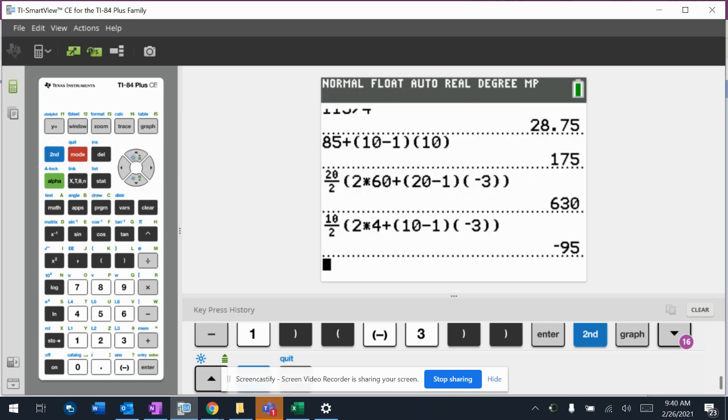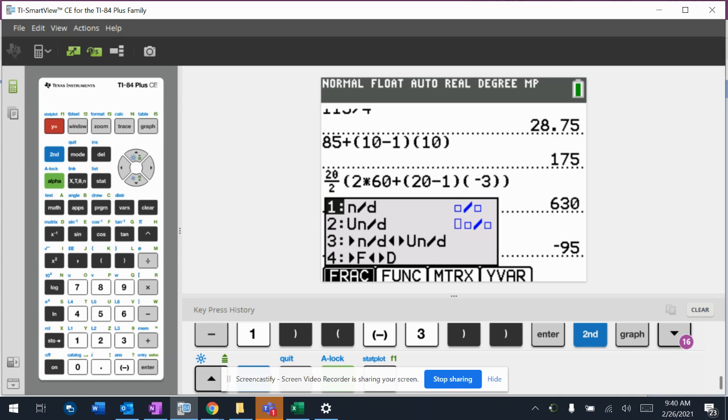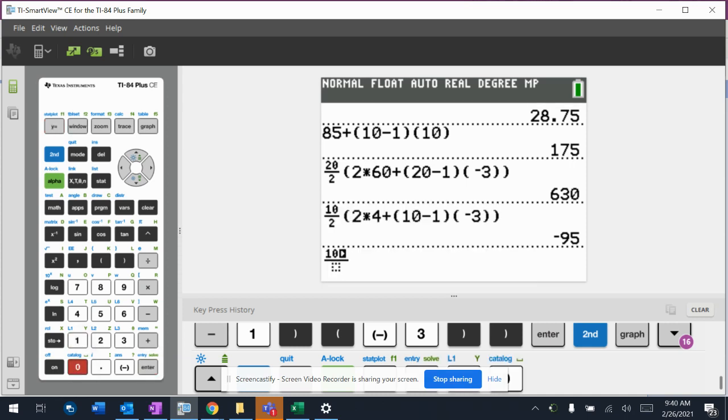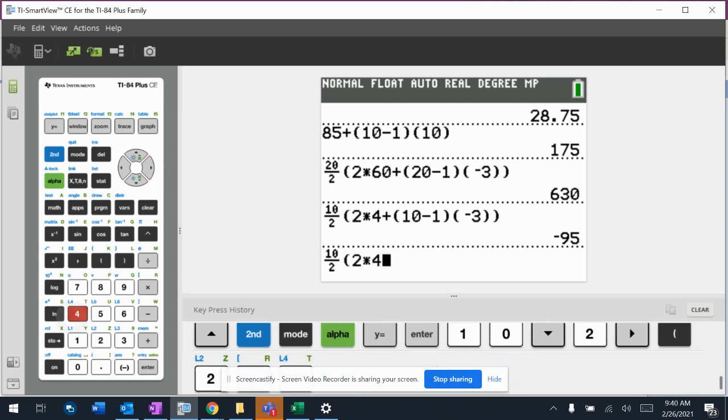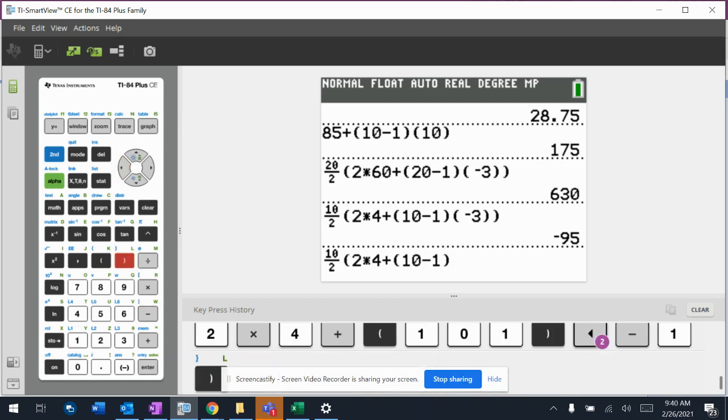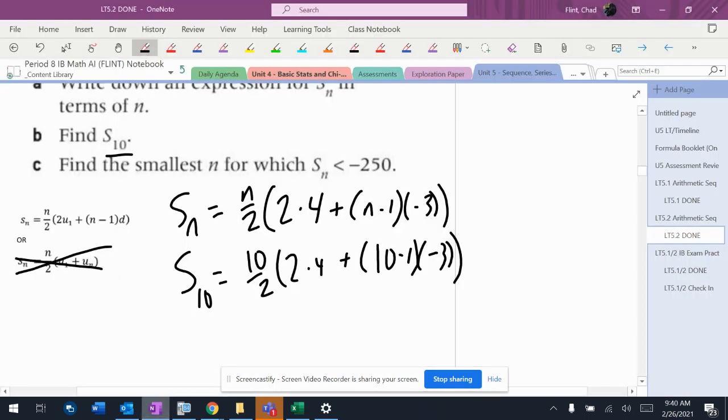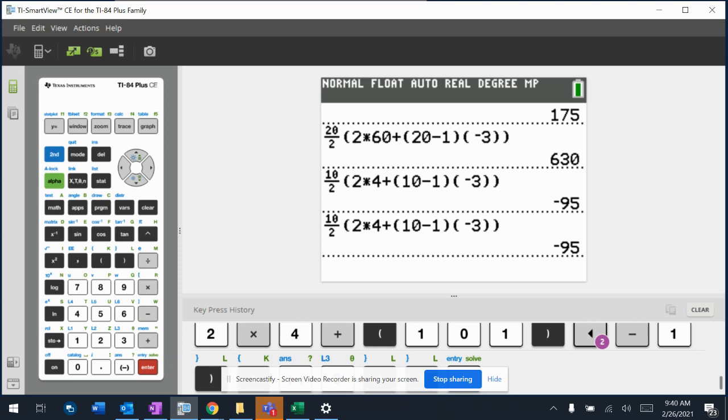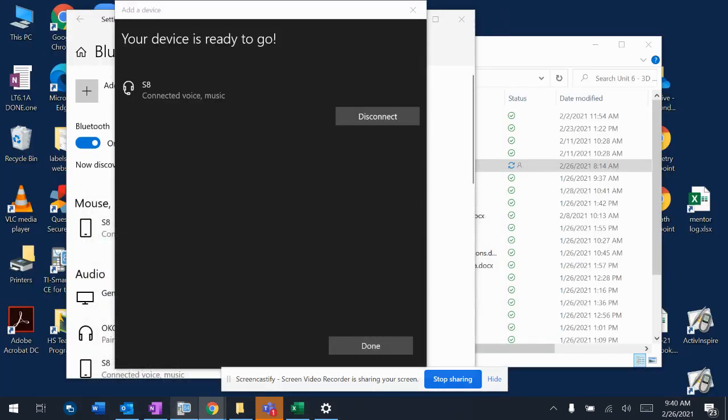All right, so I already did it because I did this video once already and then in part C I did a very complicated way and then I thought about it, so I'm not going to do that right now. So 2 times 4 plus 10 minus 1, that's not 10 minus 1, 10 minus 1 times negative 3. So there's the exact same thing that I have written in OneNote. So I hit enter and it gives me negative 95 for my sum.